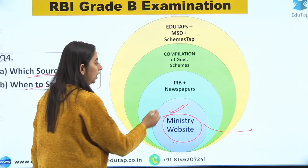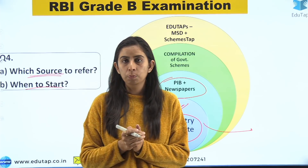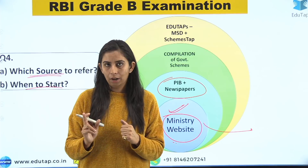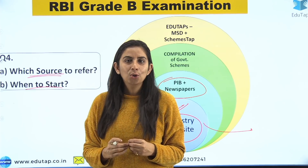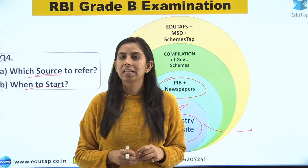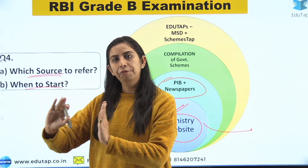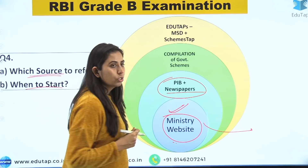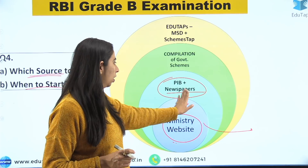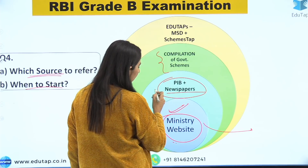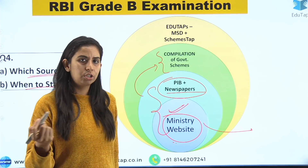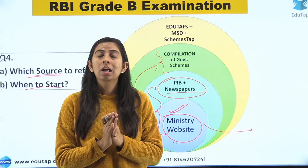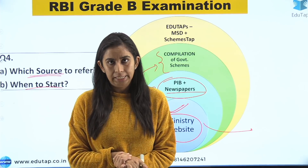Second source: PIB and newspapers. If you're covering current affairs and referring to PIB for schemes, all the required information is covered there, but not in a very structured manner. PIB does not know you are preparing for RBI, so you'll have to find different PIB links to cover one particular thing. Alternatively, newspapers — when a scheme is launched, its purpose, aim, and ministry are usually given. Government scheme compilations are also available, though they may not be specifically oriented towards RBI. When you know the examination's requirements, you can cover it from any source.